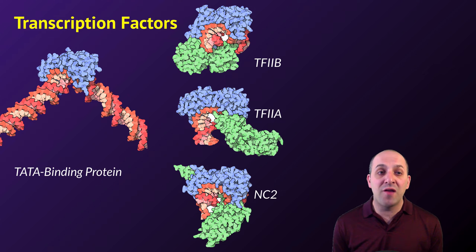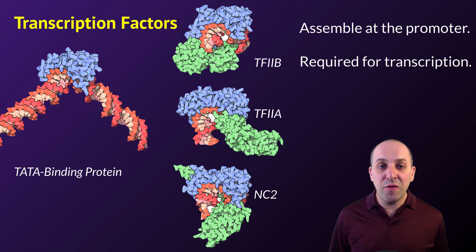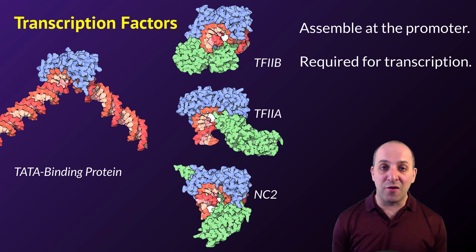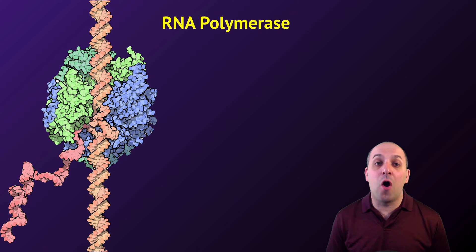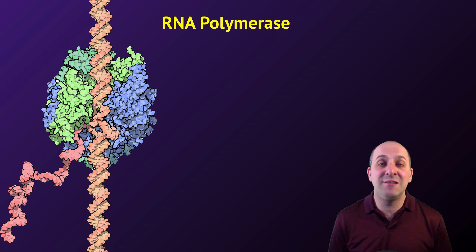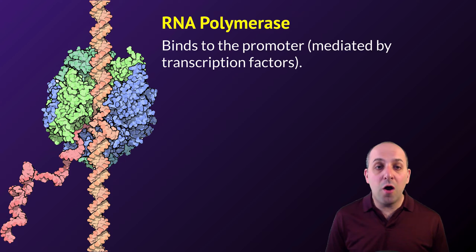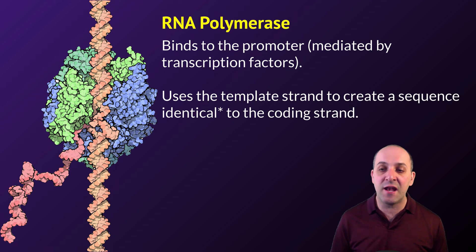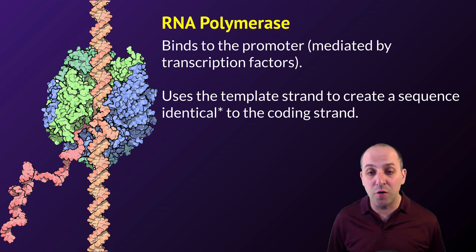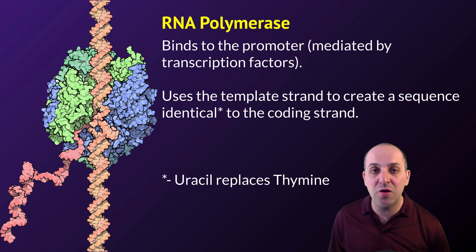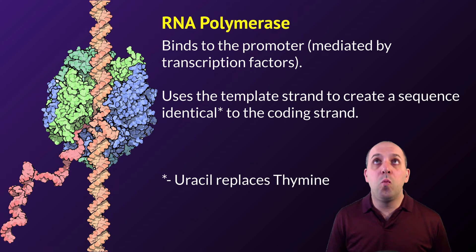Transcription is largely controlled through the presence of transcription factors — proteins made by the cell that assemble at the promoter and allow transcription to occur. Without the required transcription factors at the promoter, transcription will not happen. The enzyme that actually transcribes a gene is known as RNA polymerase. Its function is somewhat similar to DNA polymerase in replication, except that RNA polymerase synthesizes an RNA strand from the DNA gene template. RNA polymerase binds to the promoter — controlled by the presence or absence of transcription factors — and uses the template strand of the DNA molecule to create a sequence identical to the coding strand, except that RNA replaces thymine with uracil.